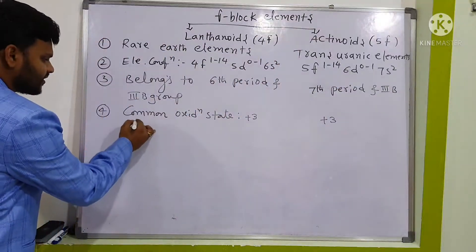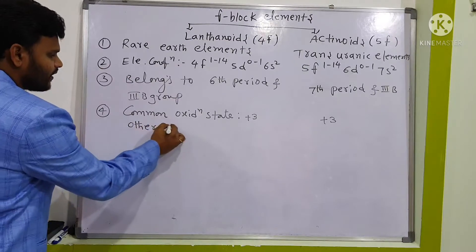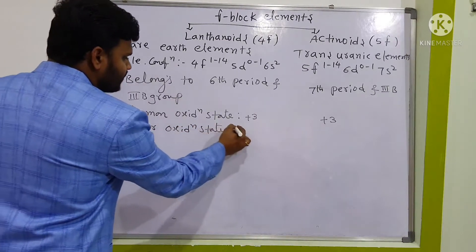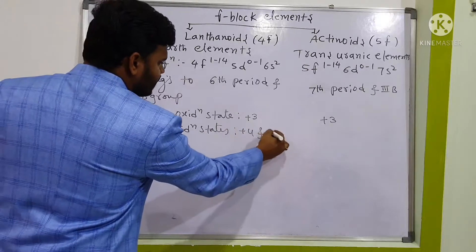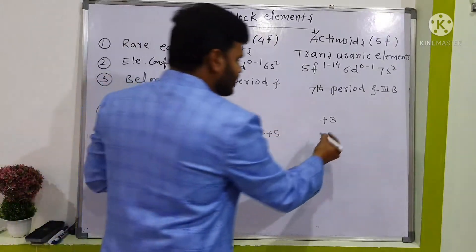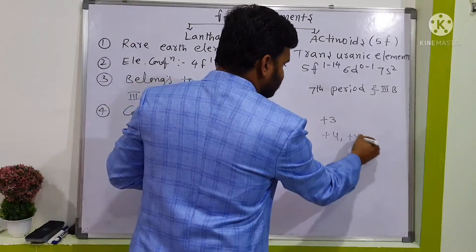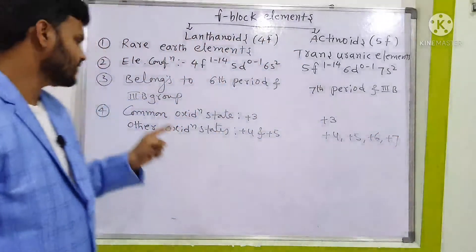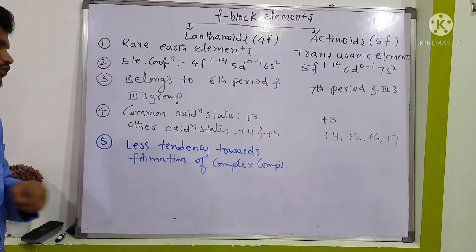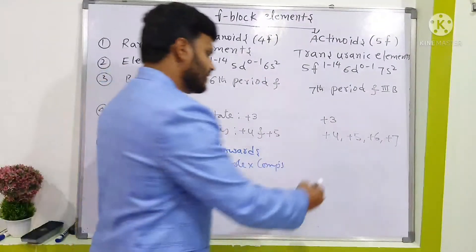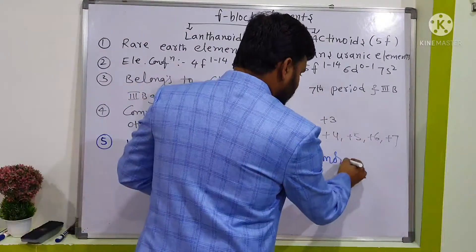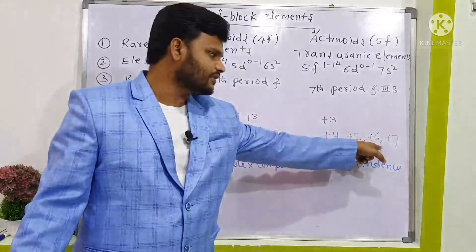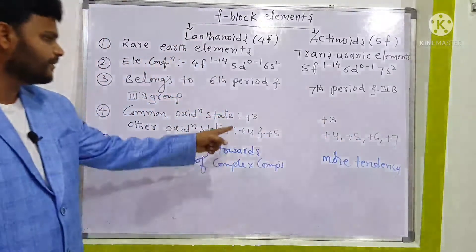Other oxidation states for lanthanoids are +4 and +5. For actinoids, other oxidation states are +4, +5, +6, and +7 as well. That is why actinoids show more tendency towards formation of complex compounds, while lanthanoids show less tendency — because actinoids have maximum possibilities of oxidation states.